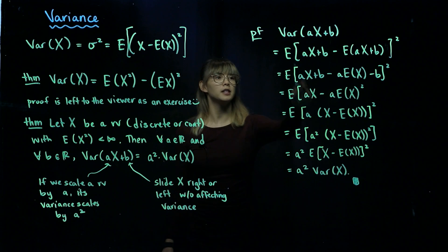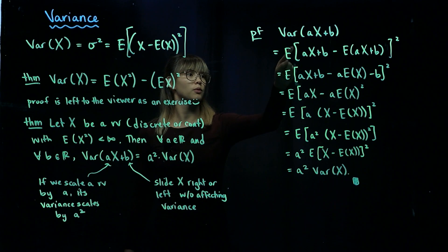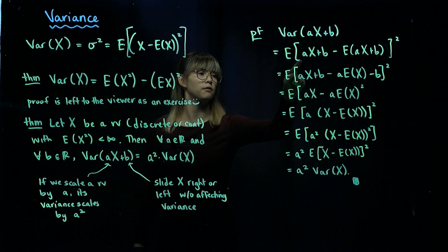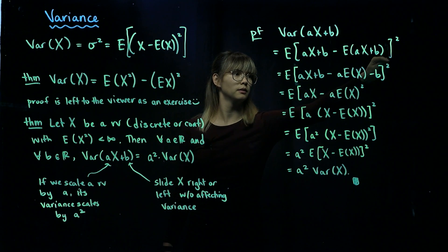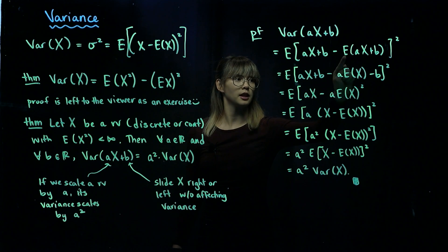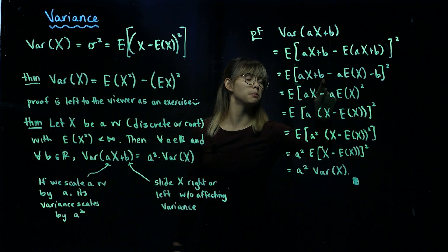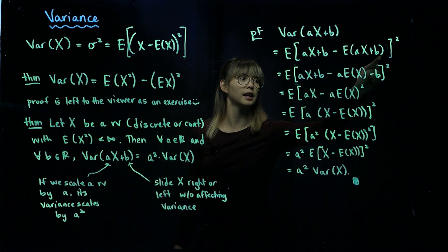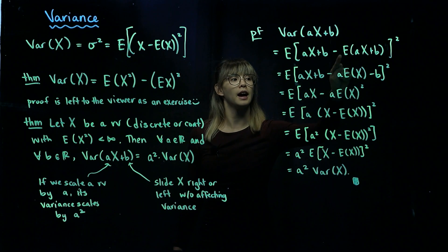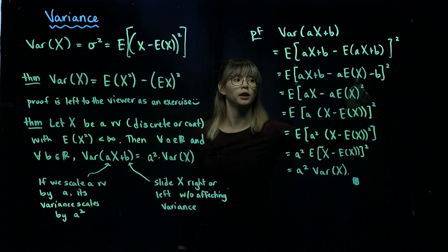Let's do a proof of the variance of aX plus b. We take the definition of variance, so the variance of aX plus b is equal to the expected value of the square of the quantity aX plus b minus its expected value, which is the expected value of aX plus b.